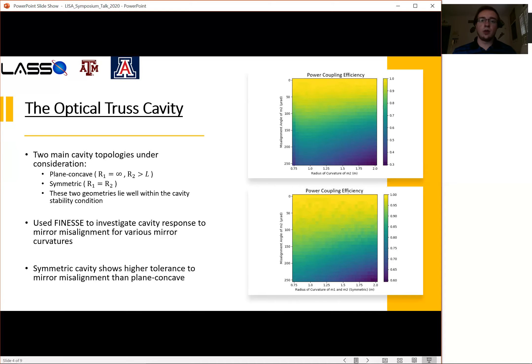The way that we wanted to analyze the pros and cons of either geometry is to use FINESSE, which is an interferometer simulation software. We use this to investigate the cavity response to mirror misalignment for various mirror curvatures. Some examples of this analysis are shown here on the right. On the upper right is shown the analysis on the plane-concave geometry, and beneath it is the analysis on the symmetric cavity geometry.